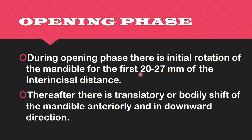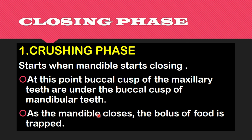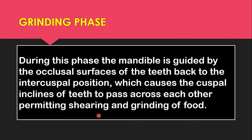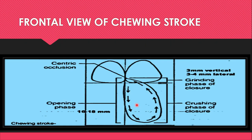During the opening phase, there is initial rotation of the mandible for the first 20 to 27 mm of the incisal distance, and thereafter there is a translatory or bodily shift of the mandible in the anterior and downward direction. When the mandible is traced in the frontal plane during a single chewing stroke, it follows a tear-shaped movement pattern. It drops down from the intercuspal position to a point where the incisal edges are 16 to 18 mm apart, then moves laterally 5 to 6 mm from the midline before closing movement begins.